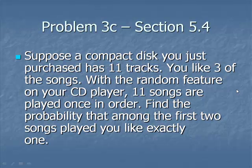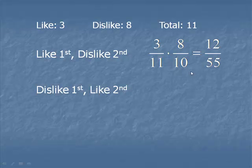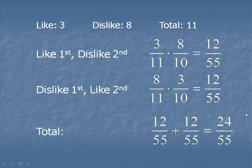Finally, we're going to calculate the probability that you liked exactly one of those songs. There are a couple of ways this could happen. First, we'll calculate the probability you like the first, dislike the second. There's a three out of 11 chance you like the first. At that point, there still are eight songs that you dislike of the ten that remain on the CD. Now we'll move on to the other order, where you dislike the first but like the second. Notice that the numerators here change places. There's an eight and 11 chance that you dislike the first, and of the three that you like, there are ten songs left on the CD. At this point, we'll go ahead and add these two probabilities together to get 24 out of 55.